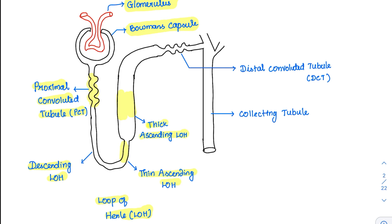After the loop of Henle, there is one more convoluted tubule distally, called the distal convoluted tubule or DCT. Then, coming to the final collection, all nephrons drain into a collecting tubule. The collecting tubules of various nephrons come together to form the collecting duct. So this is the basic structure of a nephron.